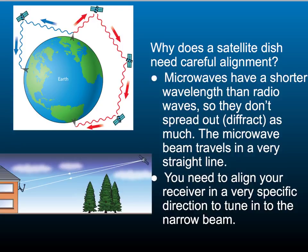So why does a satellite dish need careful alignment? Well, microwaves have a shorter wavelength than radio waves. As a result, they don't spread out or diffract as much as radio waves. This is the reason the dishes need such careful alignment. The microwave beam travels in a straight line, not spreading out very much at all. The dish needs to be precisely the correct angle to reflect the signal onto the receiver.